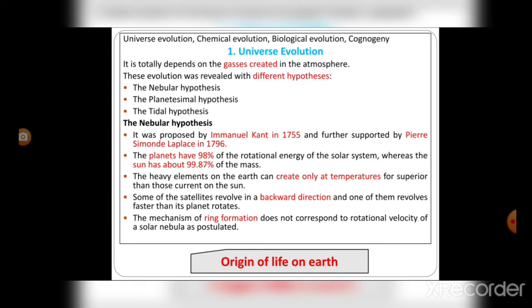The Nebular hypothesis was proposed by Immanuel Kant in 1755 and further supported by Pierre-Simon Laplace in 1796. The planets have 98% of the rotational energy of the solar system, whereas the sun has about 99.87% of the mass. The heavy elements on Earth can be created only at temperatures far superior than those current on the sun.